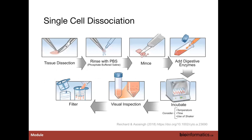Single cell dissociation is the first step, involving dissection, rinsing and mincing, adding digestive enzymes and incubation. These steps are definitely tricky and very important in terms of optimization, especially for fragile cell populations from difficult-to-sequence tumor specimens.